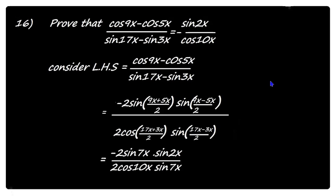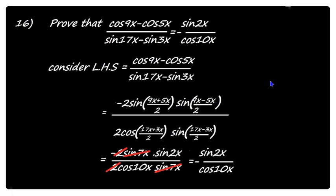In the next step, 2 and 2 get cancelled, and sin 7x and sin 7x get cancelled. What remains is minus sin 2x divided by cos 10x, which is equal to the right hand side.